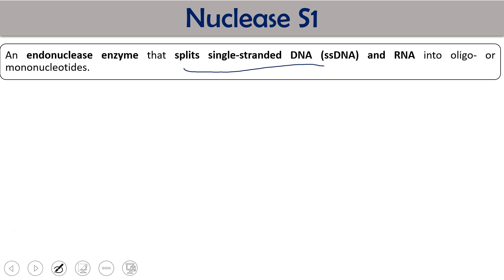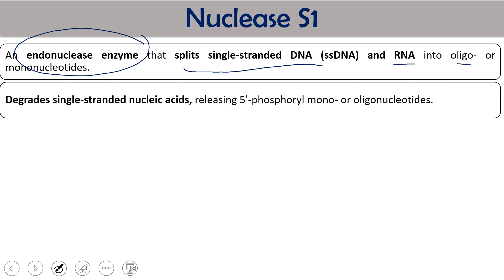It splits single-stranded DNA and RNA into oligonucleotides and mononucleotides. The important thing you need to remember is it is an endonuclease which splits single-stranded DNA. It degrades single-stranded nucleic acid, releasing 5 prime phosphoryl mono or oligonucleotides.